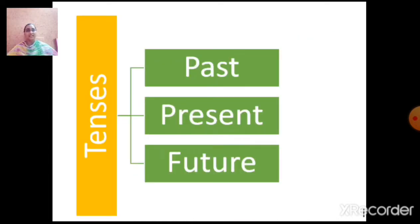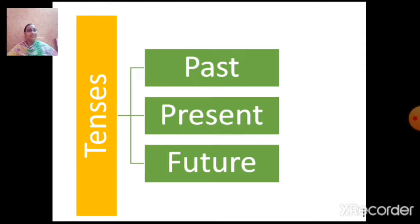Earlier we understood about tenses — that tenses indicate the time when an action or event occurs, or when a state or process holds. We also understood that tenses are of three categories: present tense, past tense, and future tense. Then we learned about present tense, which is again divided into four subcategories: present simple, present continuous, present perfect, and present perfect continuous. Now let's quickly revise these four subcategories and then we will start with past tense.